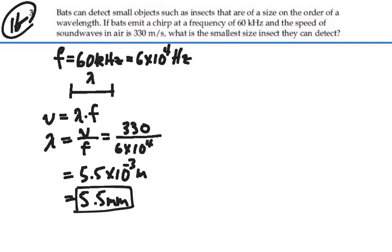Just a little bit more than half a centimeter. 5.5 millimeters would be the smallest insect they could detect. Here's, that's about a centimeter. So we're talking about this size right there. That would be about the size of the insect they could detect. Small size. Answer: 5.5 millimeters.